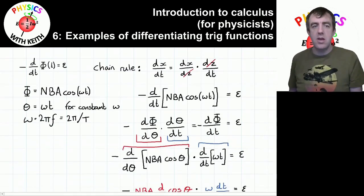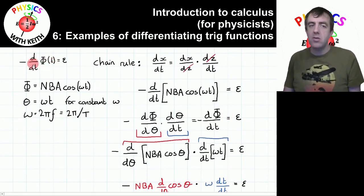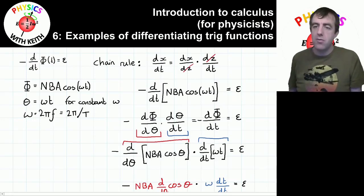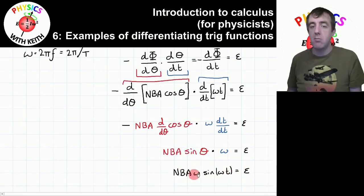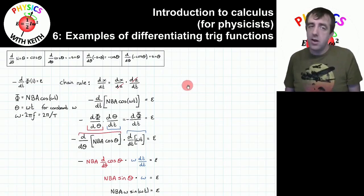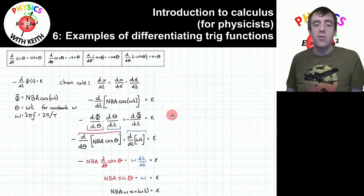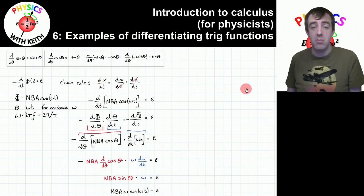We started with the EMF equaling d phi(t) by dt — a differential equation. But we finish with an equation we can actually use: plug in a time and the constants and know what the EMF is. There were two parts to this: the first part was the chain rule, useful for functions of functions; the second part was how to differentiate a cosine function. We're going to use that differentiation of the cosine function in the second example now — the simple harmonic motion example.